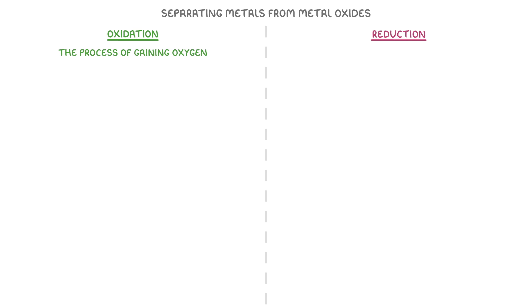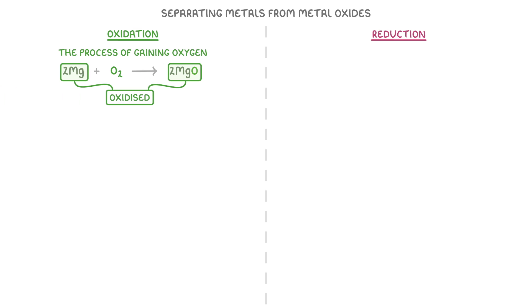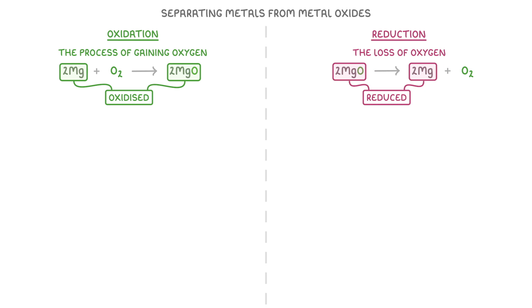Oxidation refers to the process of gaining oxygen. For example, if we combined magnesium with oxygen to form magnesium oxide, we could say that we oxidised the magnesium. Meanwhile, reduction is the loss of oxygen. So if we broke our magnesium oxide back into magnesium and oxygen, we would have reduced the magnesium.